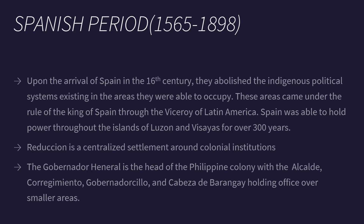Reducción is a centralized settlement around colonial institutions — this is where the colonial government lived. The Gobernador-General is the head of the Philippine colony, with the alcalde, corregimiento, gobernador silio, and cabeza de barangay holding office over small areas.